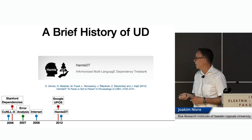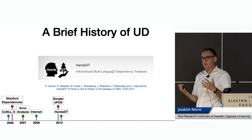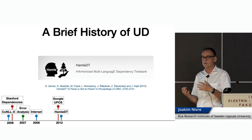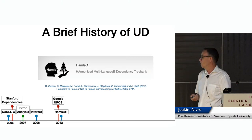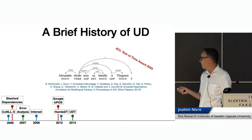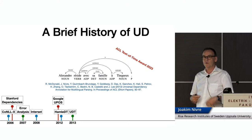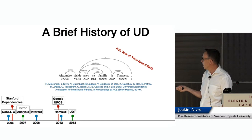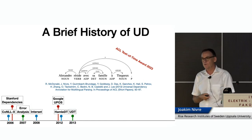A year later, together with colleagues at Google where I was on sabbatical, we recognized that people had started using the Stanford dependencies for different languages. But in doing so, they created different dialects of Stanford dependencies, so they were not really compatible after all. We proposed a standardization of that in a paper called 'Universal Dependency Annotation for Multilingual Parsing.' I'm very happy to tell you that we actually got an ACL Test of Time Award for this paper earlier this year.